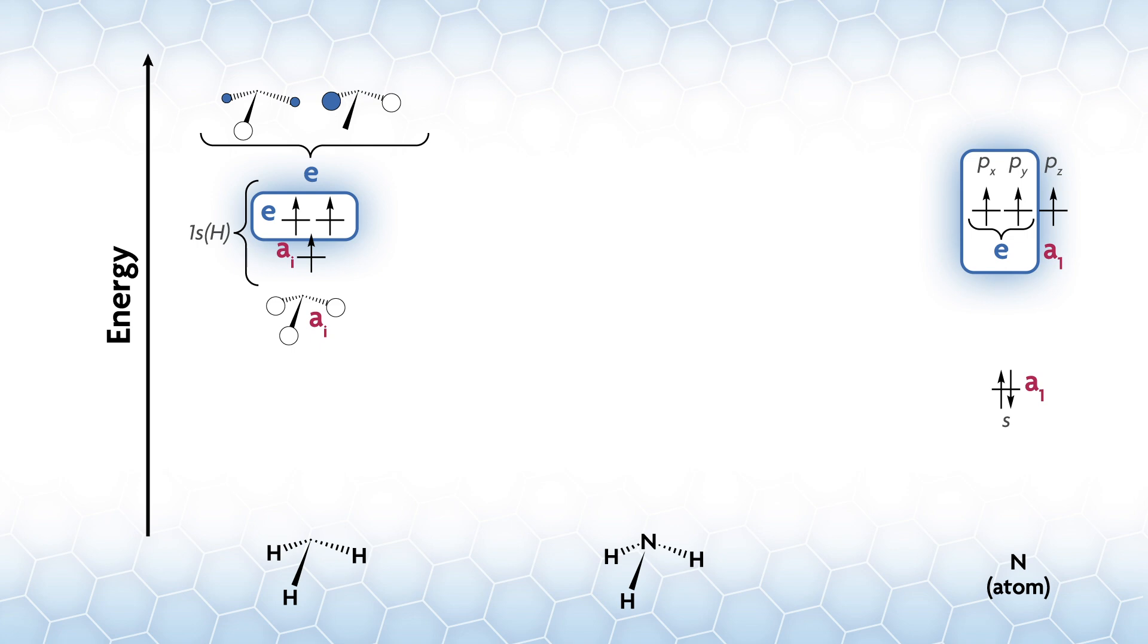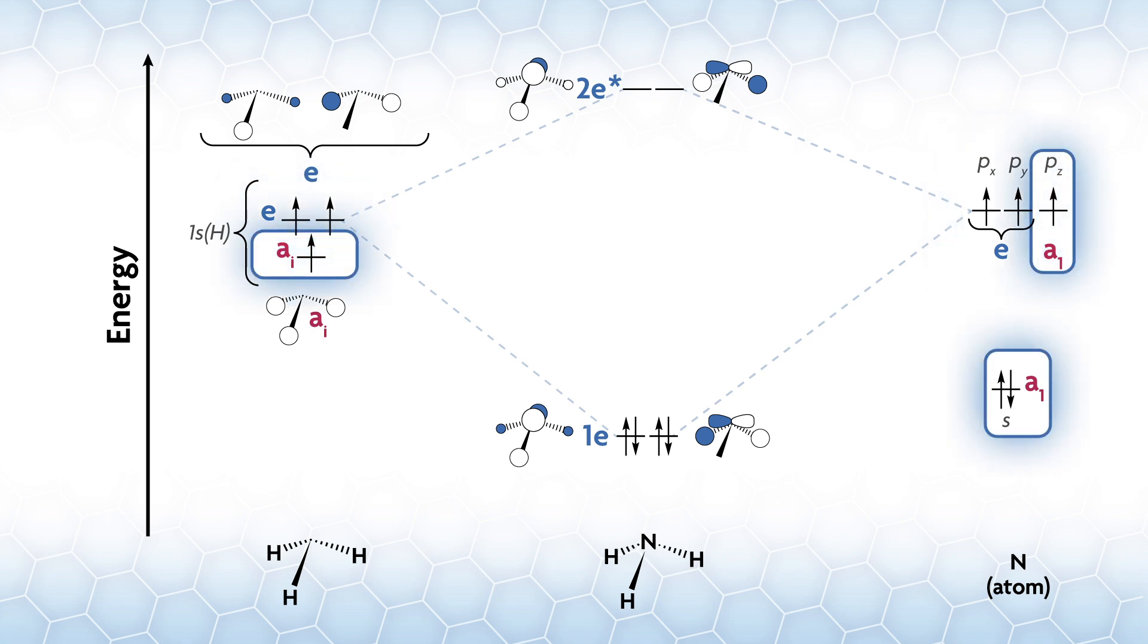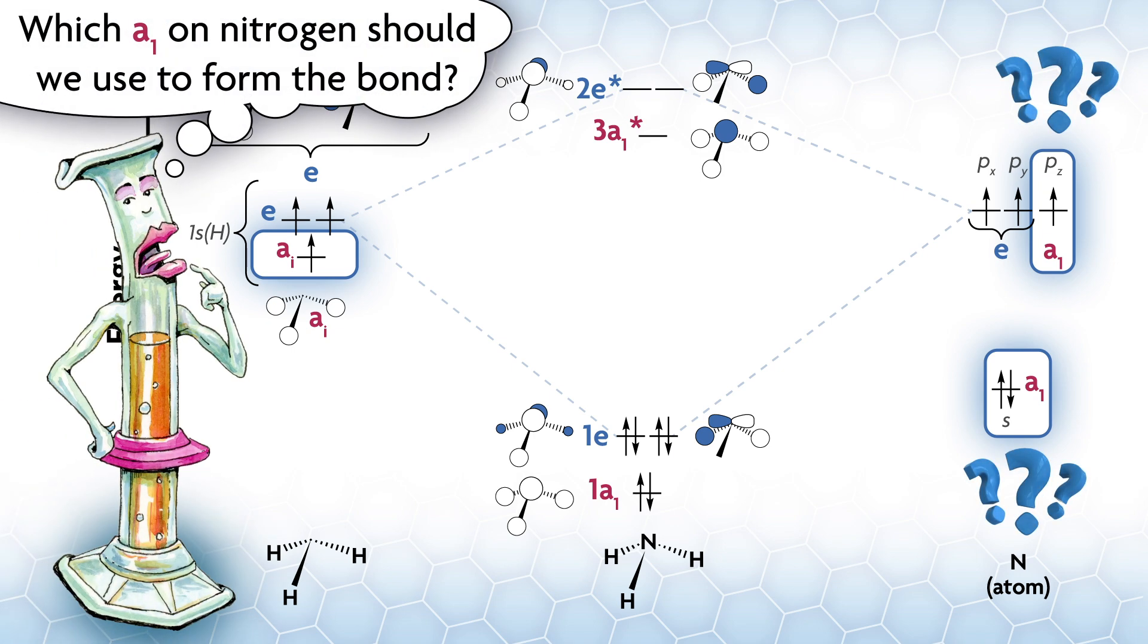There's one pair of e orbitals on each side. Those will interact to give bonding and antibonding orbitals 1e and 2e star. Now we have a three-orbital interaction. The s and pz orbitals on nitrogen both have a1 symmetry, and there is one a1 SALC on the left side. As a result, we can form a single a1 bonding orbital and an antibonding orbital. Without any other information, we will bring the other a1 orbital across as essentially non-bonding to start, but which a1 on the nitrogen should we use to form the bond?